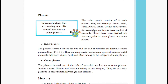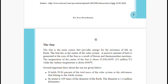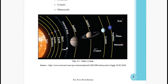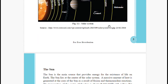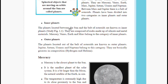Between Mars and Jupiter there is a belt of asteroids. Planets have been divided into two categories: inner planets and outer planets. The four planets before the asteroid belt — Mercury, Venus, Earth, and Mars — are called inner planets. The four planets after the asteroid belt are called outer planets.